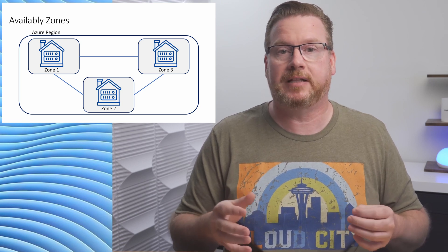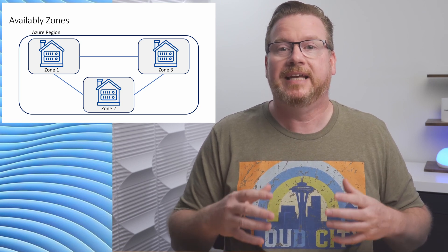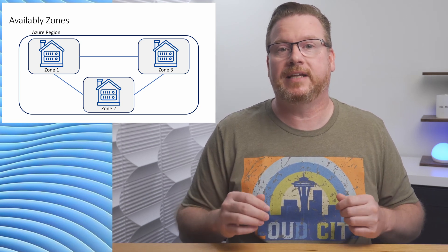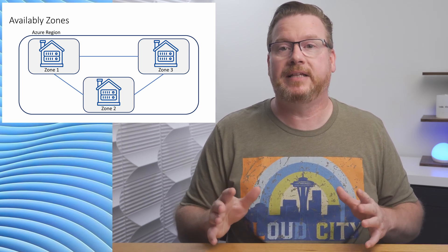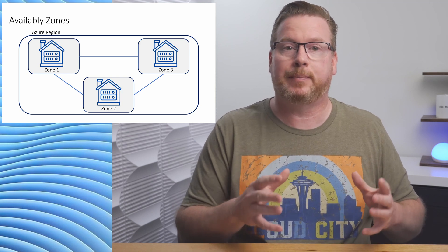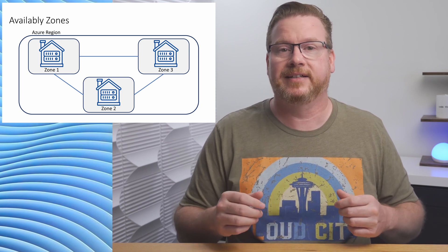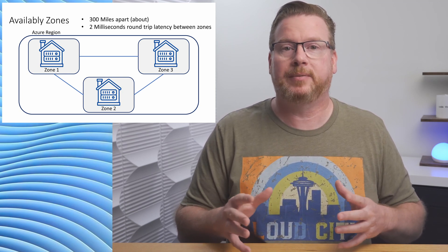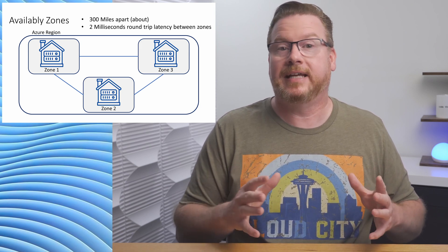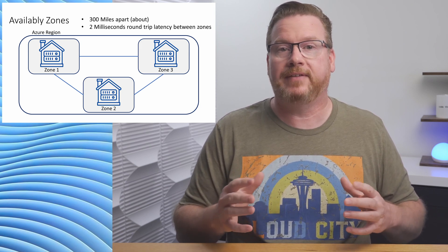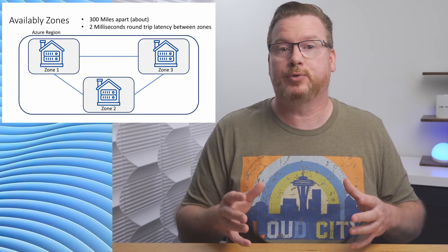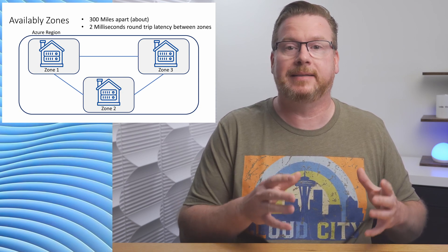We can use availability zones instead of availability sets to distribute deployments across data centers in a region. Each region that supports availability zones has at least three well-connected data centers. Availability zones exist within the same region, but each zone is in a separate data center. These data centers are separated by about 300 miles, connected with private high-speed networks, and have less than two milliseconds of round-trip latency between them.